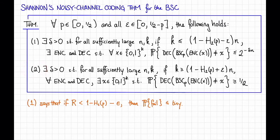The second part of the theorem, part two, says that there exists some constant delta greater than zero, so that for all sufficiently large n and k, if k is a little bit larger than that, so k is larger than (1 - H(P) + ε) times n, aka the rate is bigger than that, then for all encoding and decoding maps, in particular for all codes,